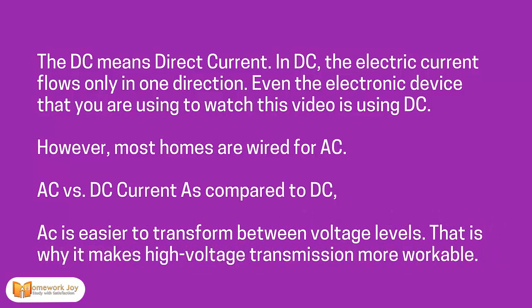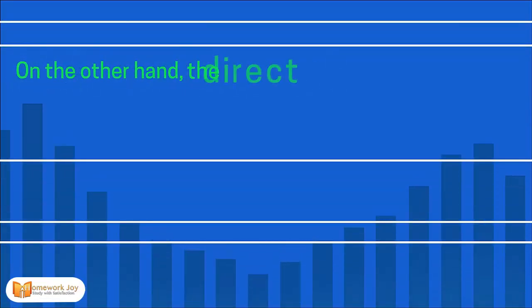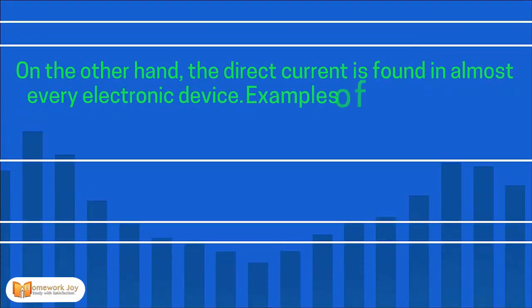However, most homes are wired for AC. AC versus DC: compared to DC, AC is easier to transform between voltage levels. That is why it makes high voltage transmission more workable. On the other hand, direct current is found in almost every electronic device.